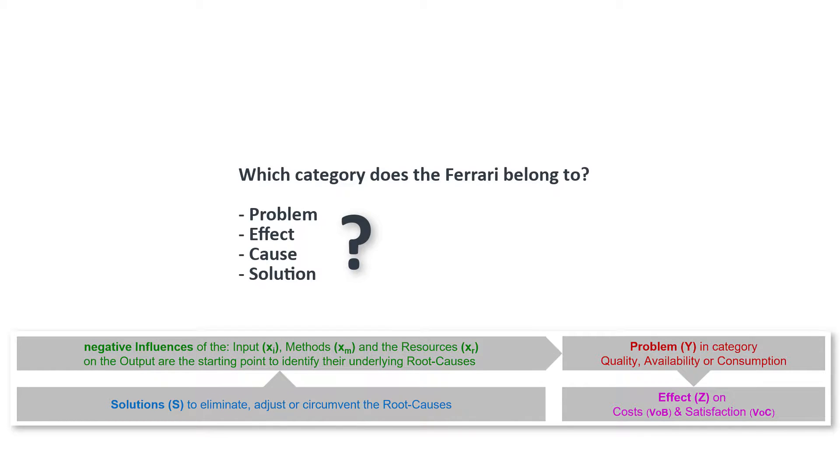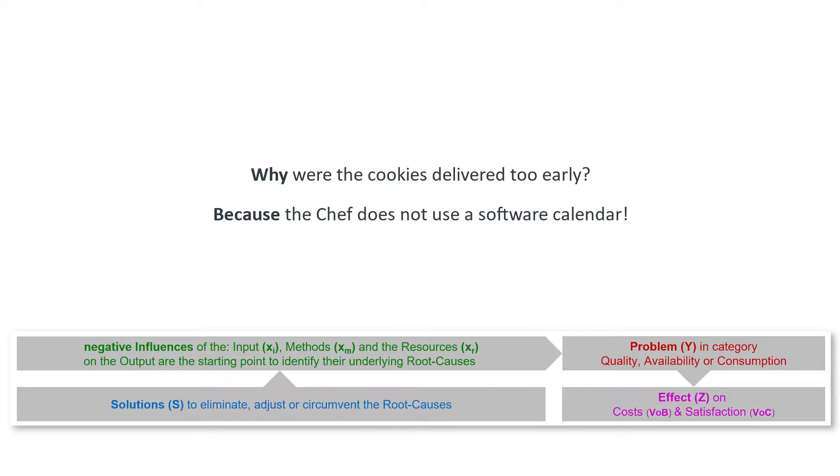Another example. Why were the cookies delivered too early? Because our chef doesn't use a software calendar. What is wrong with this conclusion? Which category does the software calendar in the model belong to?